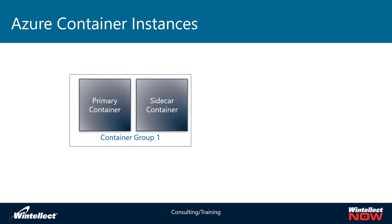Typically, a container group will have multiple containers — more than two. In fact, you can have up to around 60 running in a single container group. And each one of them gets their own vCPU allocation and their own RAM allocation, depending on what you need.